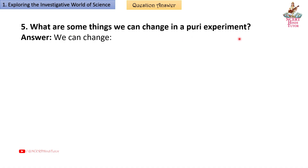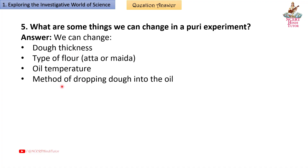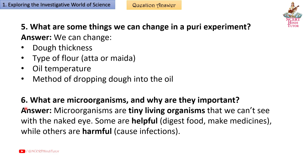Question 5: What are some things we can change in a puri experiment? Answer: We can change dough thickness, type of flour — atta or maida — oil temperature, and the method of dropping dough into the oil.